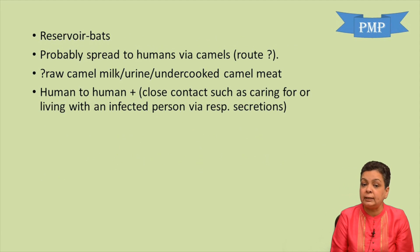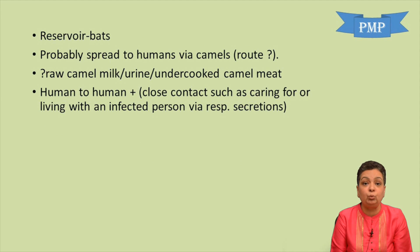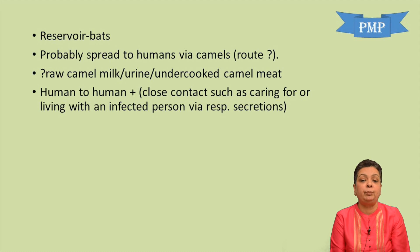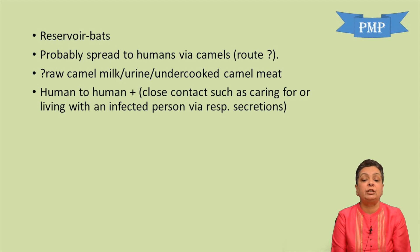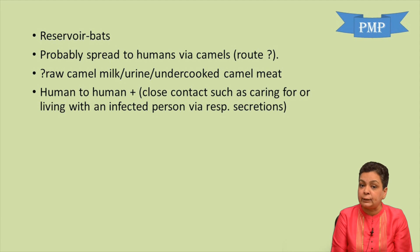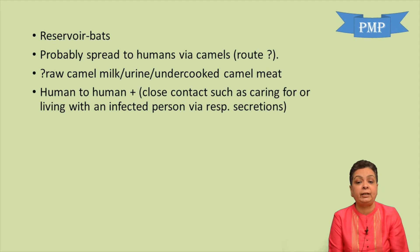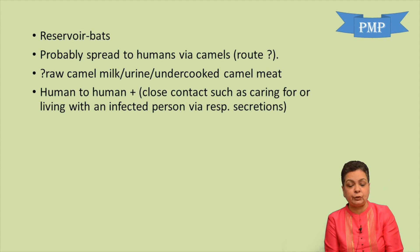The reservoir for MERS is bats, probably spread to humans via camels. The exact route is unclear — it may be through ingestion of raw camel milk, camel urine, or undercooked camel meat. Human-to-human transmission has been demonstrated and requires close contact, such as caring for or living with infected individuals, and contact with respiratory secretions.